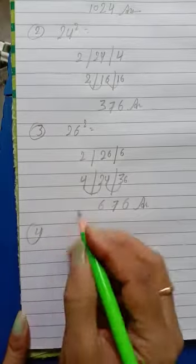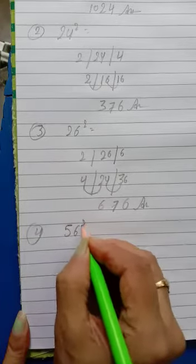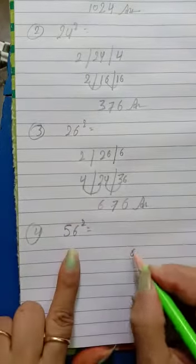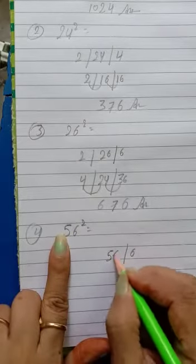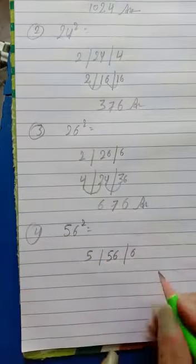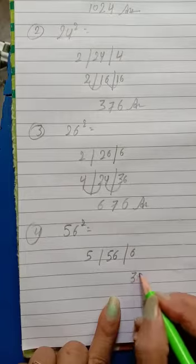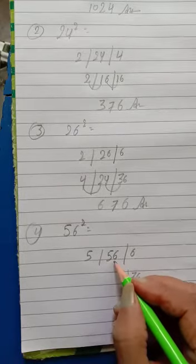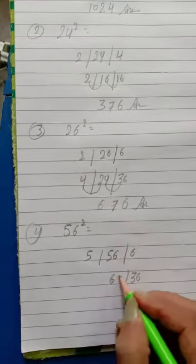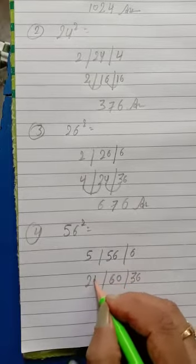Question number 4: square of 56. Is 6, then we have to insert 2 digits, then front 5. 6 times 6 is 36, 6 times 5 is 30, and 5 times 6 is 30, 30 plus 30 is 60. Then 5 times 5 is 25.